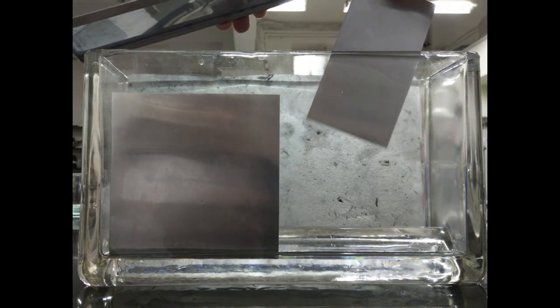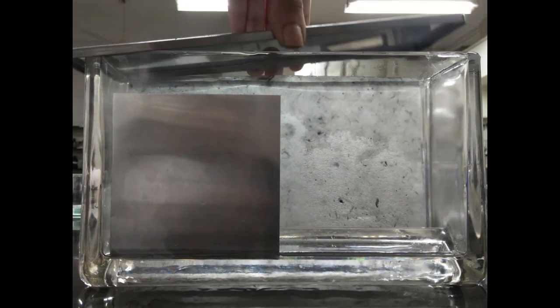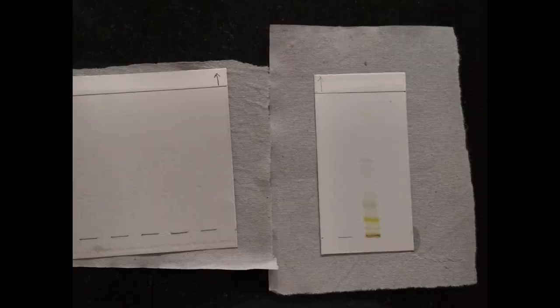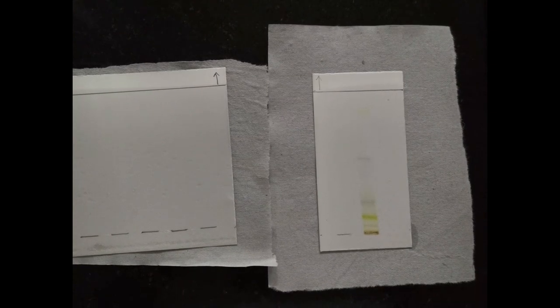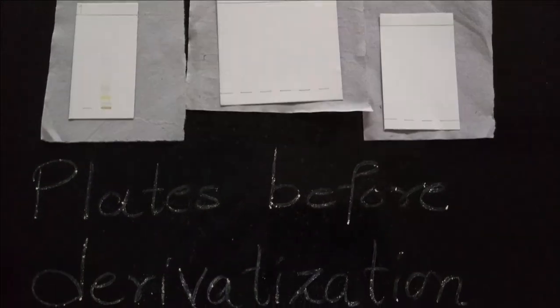After plate development, why aren't the bands visible? The bands aren't visible because there are few colorless compounds present in our sample. Hence, we use derivatizing agent.